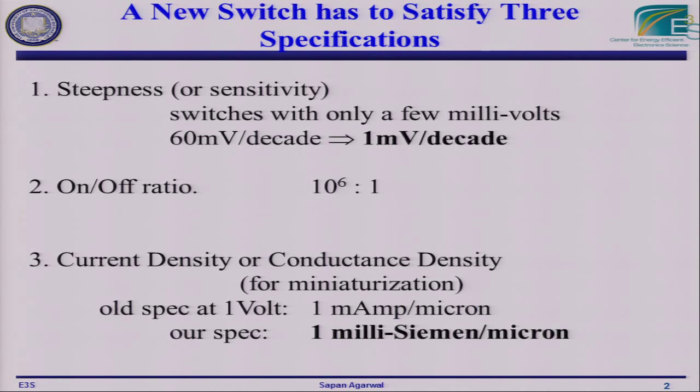The first is, of course, we want to lower the voltage — we want it to be steeper. Instead of taking 60 millivolts to get a decade change in current, ideally we'd want a few millivolts. But getting a lower voltage is only one piece of the puzzle. We also need to get a large on-off ratio, otherwise we'll just get killed by the leakage current.